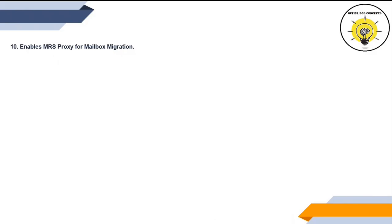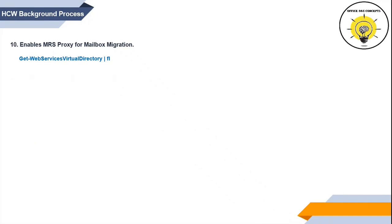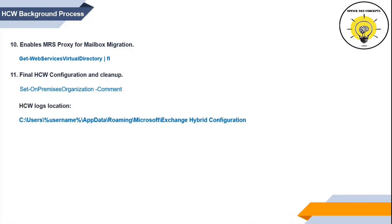Then HCW enables MRS proxy on the on-premise Exchange server so that mailbox migration can be performed. By running Get-WebServicesVirtualDirectory, we can verify if MRS proxy is enabled or not. In the last step, HCW runs Set-OnPremisesOrganization and completes the hybrid installation. If you want to analyze hybrid configuration logs, you can collect them from the specified location on the hybrid server and analyze those logs.